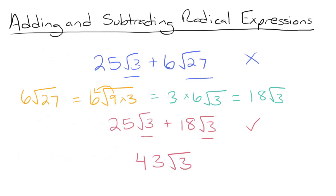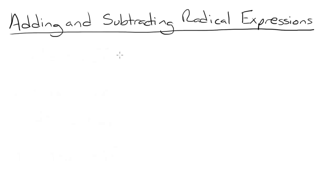Now let's take a look at a subtraction problem. Let's subtract 8 root 32 minus 2 root 8. Our radicals are not the same, so we need to start by simplifying them. In this case, both our radicals can be simplified.